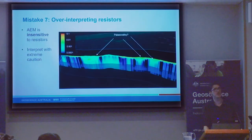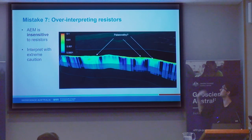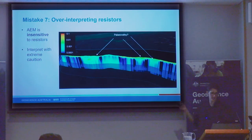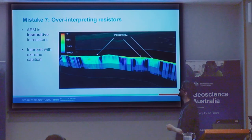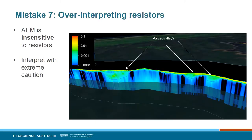AEM is actually not very sensitive to resistors. I've seen it before where people start interpreting things on the very resistive end of the spectrum. You might say, 'look at these features, they look kind of Paleo-Valley-like, I'll just interpret them.' But the colour bar here is quite extreme — what I'm calling colour bar abuse, where they've stretched it enormously to pull out some contrast. AEM is not sensitive to these features, and they are low probability.